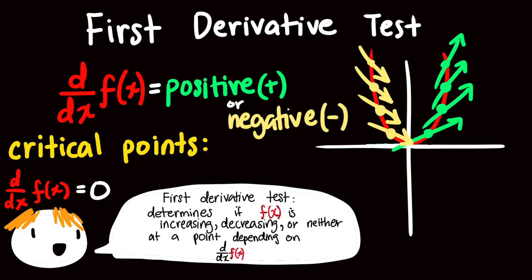So in summary, the first derivative test gives us where the function increases, decreases, and neither — which makes sense since the derivative is the rate of change.